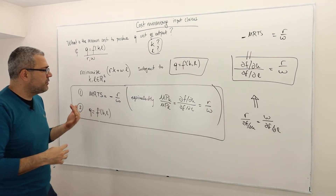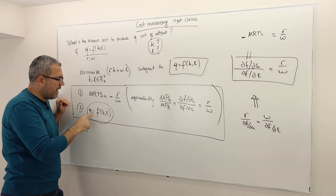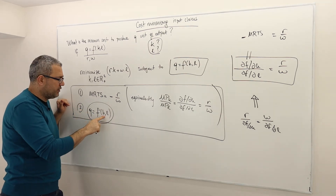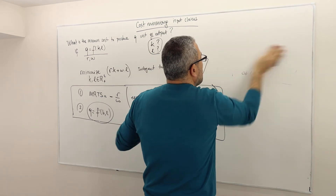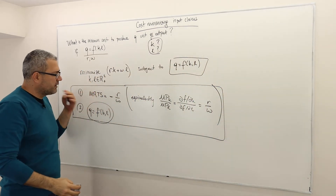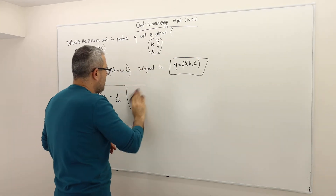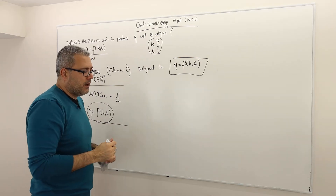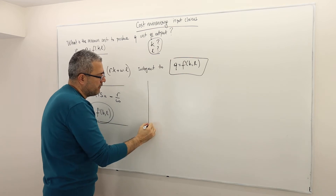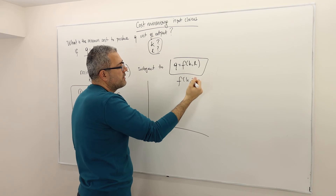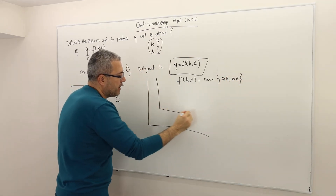Sometimes the marginal rate of technical substitution is undefined, or the indifference curves are not differentiable, so these are not sufficient conditions. The intuition says: first, you have to worry about the constraint — draw an isoquant and pick K and L input combinations on that isoquant. For example, if the production function is F of KL equals minimum of AK comma BL, we have an L-shaped isoquant curve.